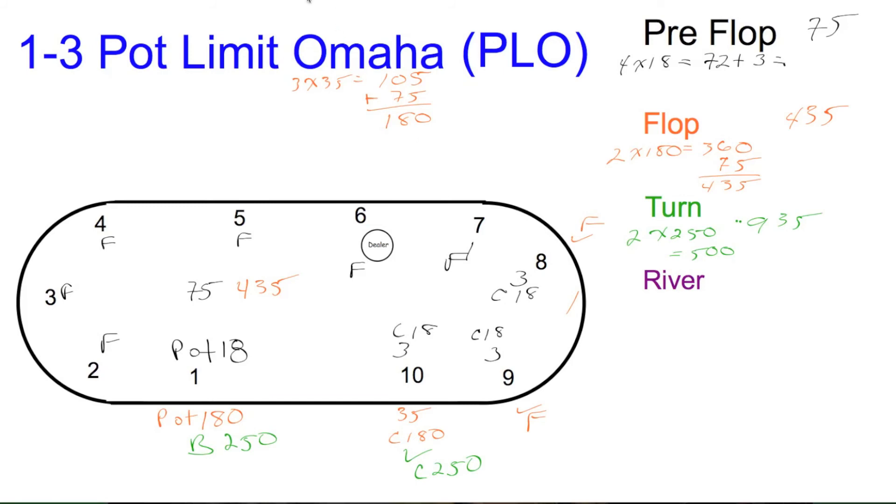Let's take this hand to the river. Seat 10 is going to check. Seat 1 is going to bet 600. Let's go crazy, and let's say seat 10 is going to make a pot bet.